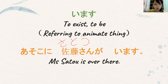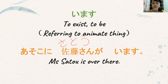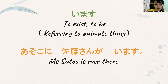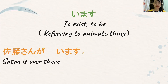So asoko is 'over there' — it's like a preposition. Asoko ni — Sato-san is Mr./Ms. Sato — ga is another particle — ga imasu, and that's the verb. Let's erase Sato. Okay, so imasu is used for human or animal.